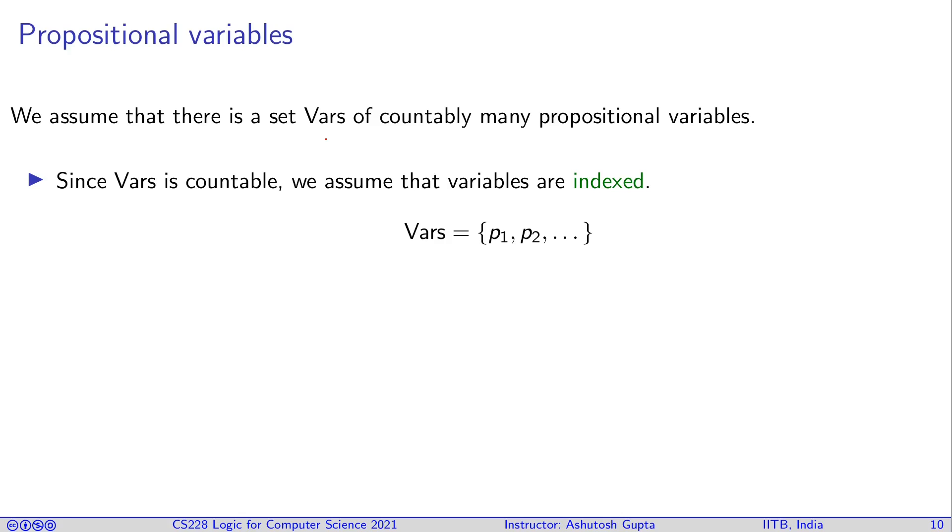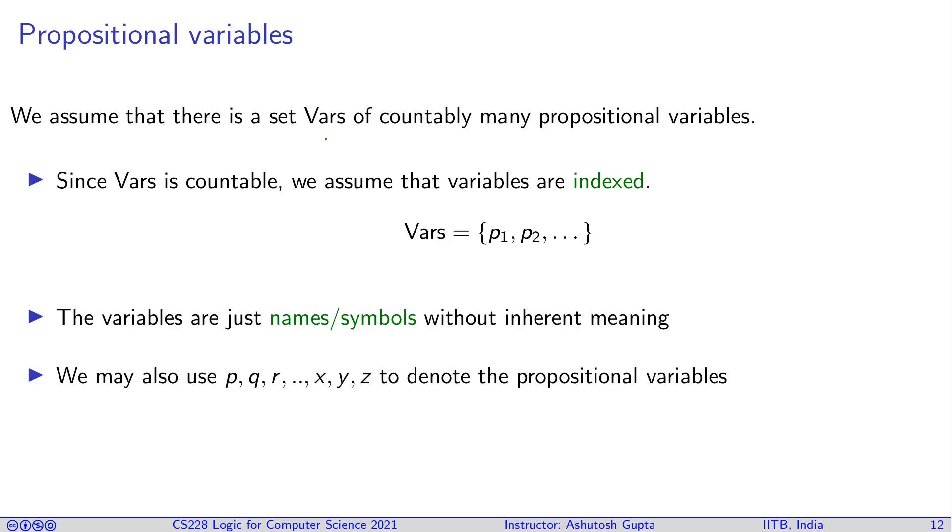Since this set is countable, what we can do is we can index each of these propositions. We can put them in an order: p1, p2, p3, p4, p5, p6. You may wonder why I want to do it; it will become clear by the end of our description of propositional logic why indexing is relevant. The variables are just names and symbols without inherent meaning. A p3 is not better than p2, and there's no difference between p10 or p1000. They're just two distinct symbols. Sometimes we drop this subscript. We sometimes write p, q, r, x, y, z to denote the propositional variables.